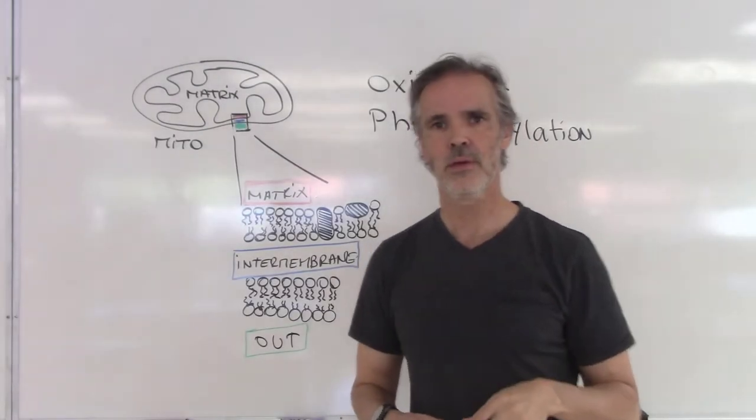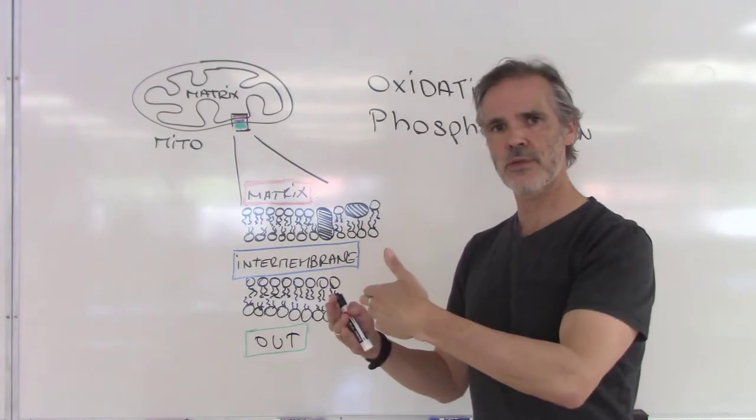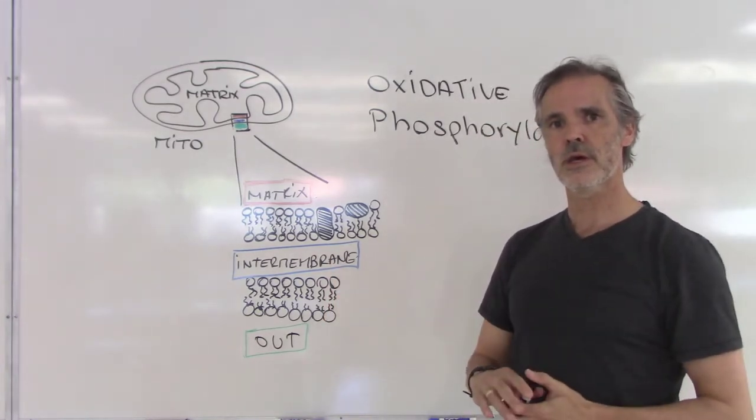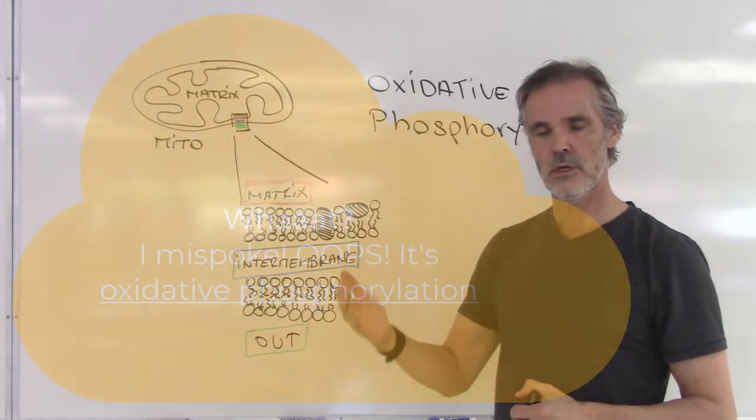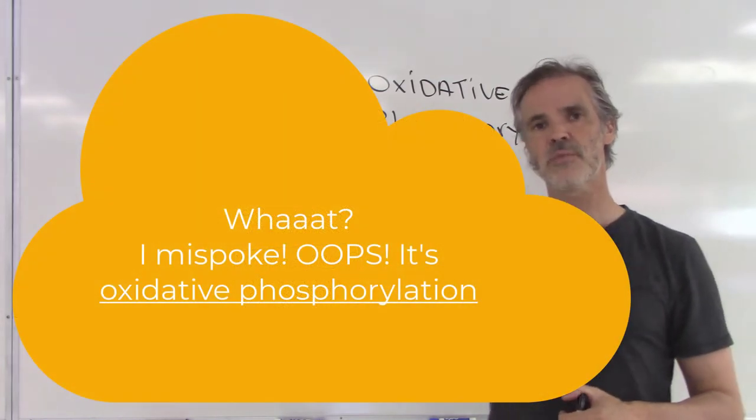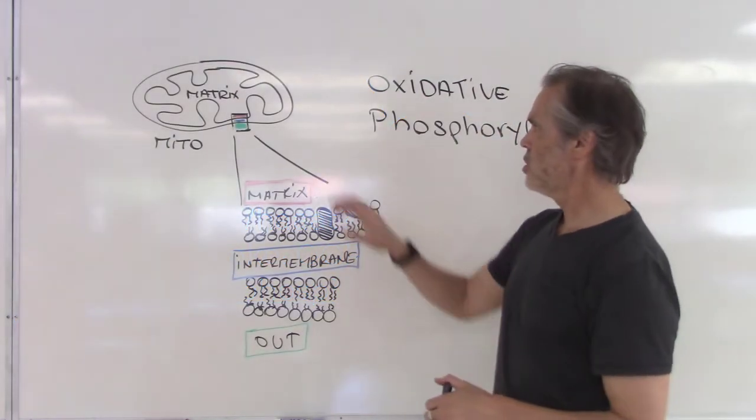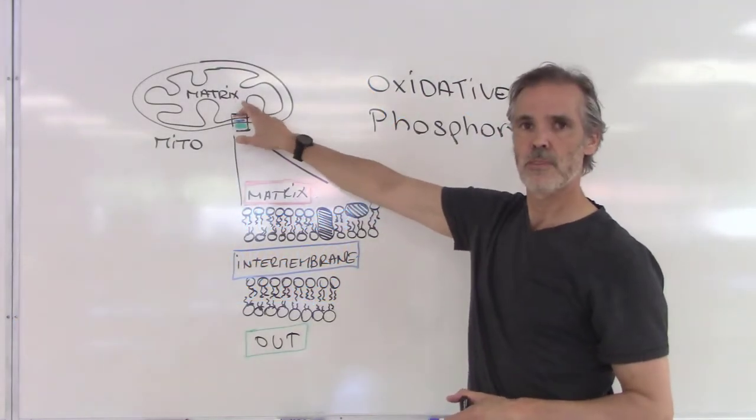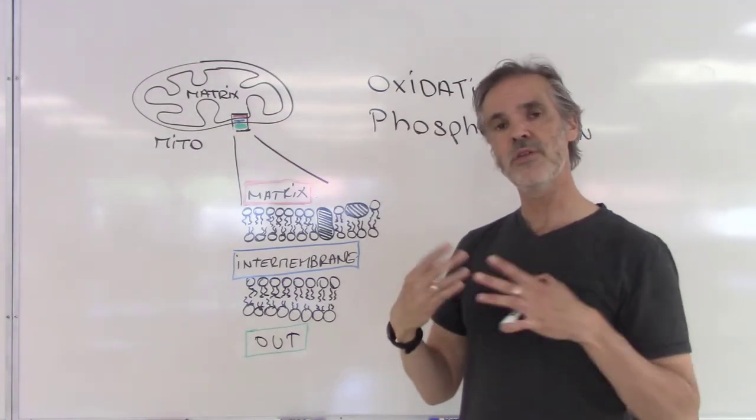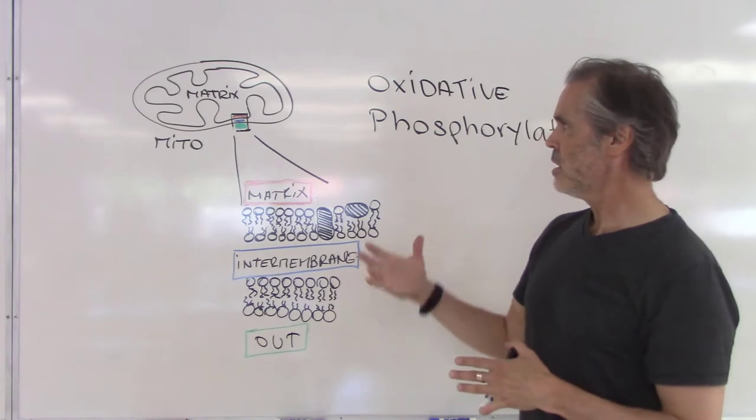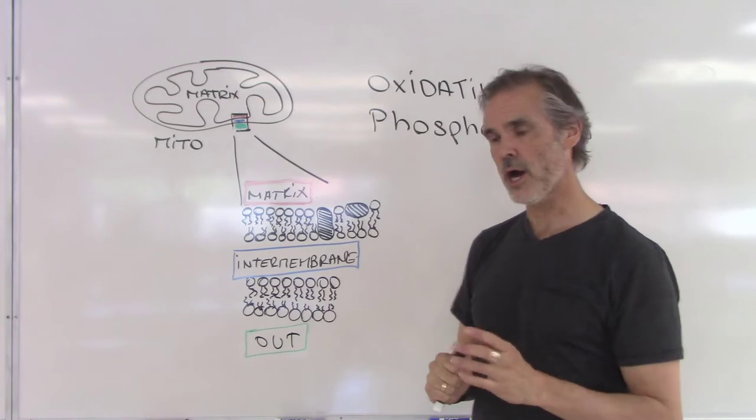The next step after the Krebs cycle is something called oxidative phosphorylation. Remember that the Krebs cycle is happening inside the matrix of the mitochondria. Now one thing that I want you to know before we get any further is that the mitochondria is a very special kind of organelle, and here's why.